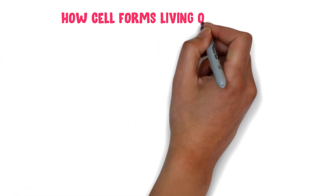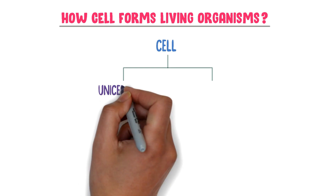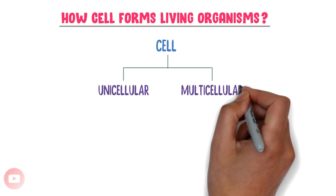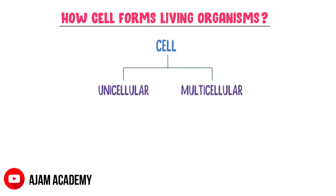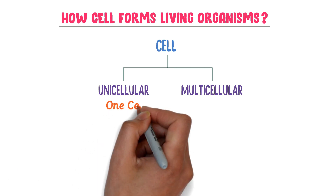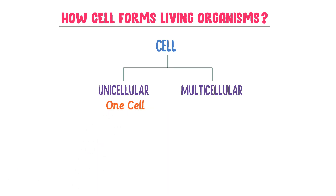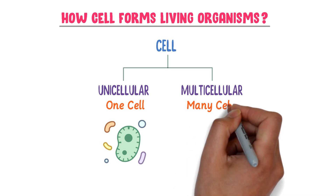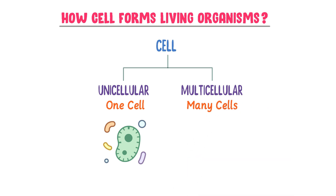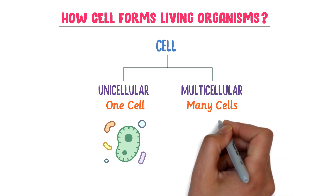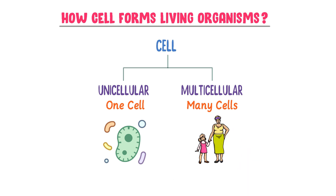How do cells form living organisms? Cells either form a unicellular organism or a multicellular organism. Uni means one, so a living thing made up of only one cell is called unicellular — for example, amoeba. Multi means many, so living things made up of many cells are called multicellular organisms — for example, human beings.